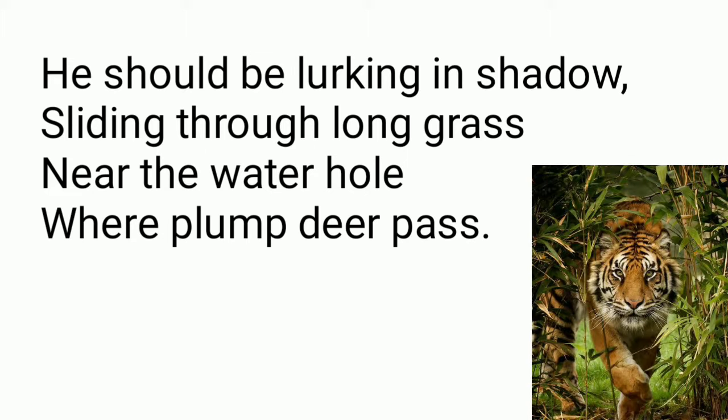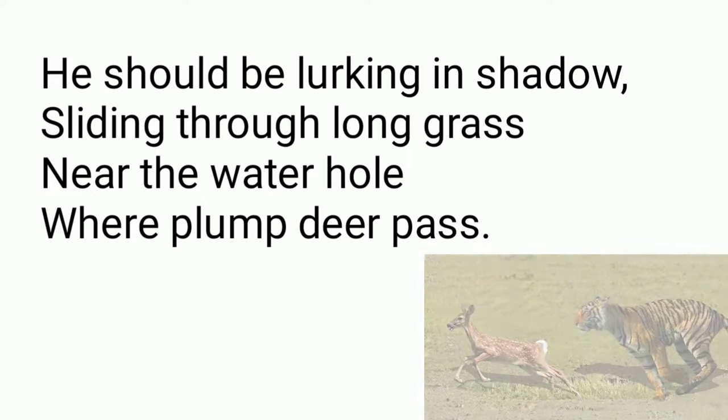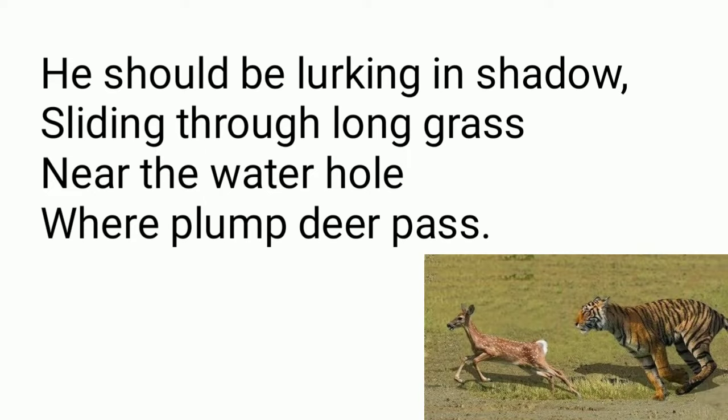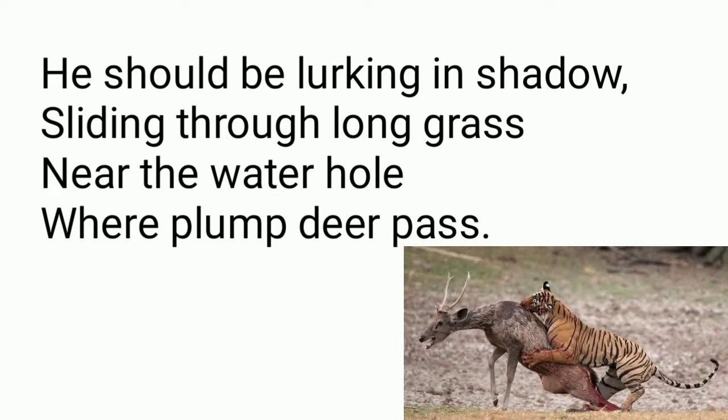Now let's look at the second stanza: 'He should be lurking in shadow, sliding through long grass near the water hole where plump deer pass.' The poet says that if the tiger were free, he would have hidden himself behind the long grass near water bodies so that he could easily catch a deer for food. Basically, the poet wants to say that the actual life of a tiger is to live in the jungle where he could catch prey and eat it, but the tiger in the cage cannot do so.